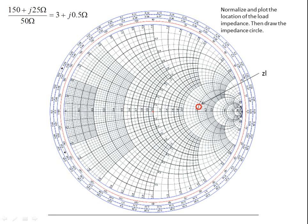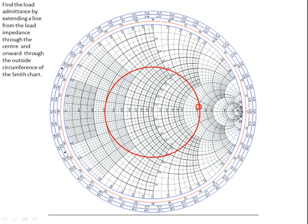We then take something like a compass and scribe a circle using that load impedance as a reference. We draw a circle by placing the compass in the center of the Smith chart and letting the pen run in circular fashion through the load. Now we know the characteristics of the transmission line.